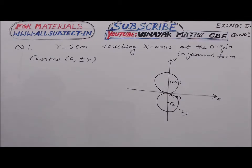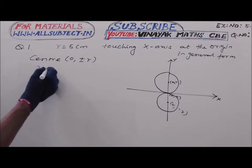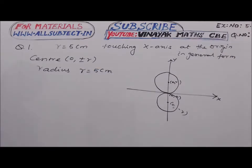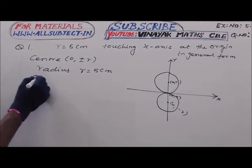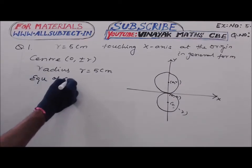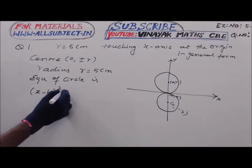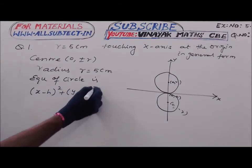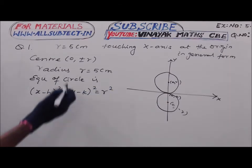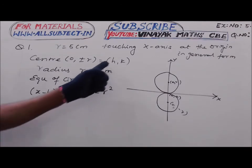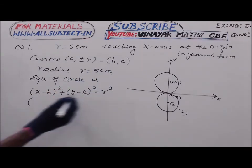There are two ways we can represent this. The given radius r equals 5 centimeters. The equation of the circle is (x - h)² + (y - k)² = r², where the center is taken as (h, k). Substitute h and k, where r is the radius.